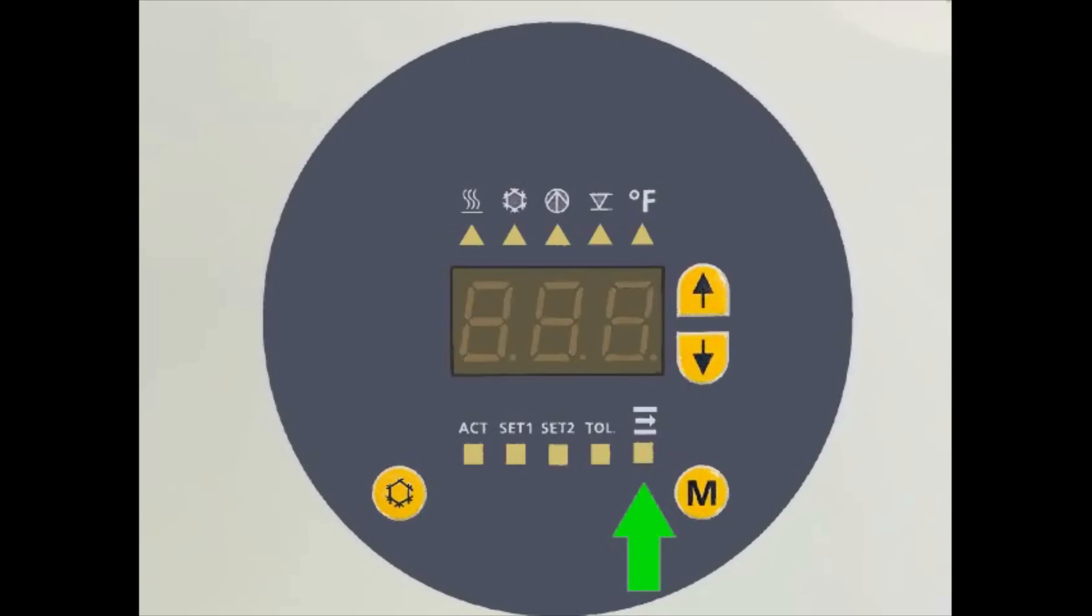Pressing the up and down arrows simultaneously will display the total output pressure of the unit.